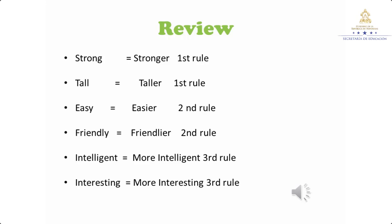Aplicamos nuestra segunda regla cuando la palabra lleva dos sílabas y termina en 'y'. Easy, fácil — lleva dos sílabas y termina en 'y'. Cambiamos la 'y' por 'i' y agregamos 'er': easier, más fácil. Apliquemos la segunda regla también a: friendly, amigable — friendlier, más amigable.